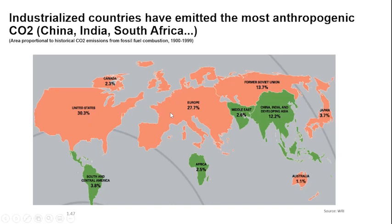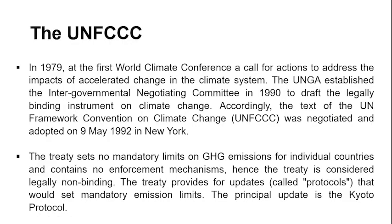Countries in red have been driving cars for much longer than we have in Africa. Those countries have lights, energy — their cities are bright and beautiful. Africa is sometimes called the dark continent, not because of literacy, but literally dark, because energy per capita is so low. These are the countries that have emitted most of the anthropogenic CO2, though of course today China is also a major emitter.